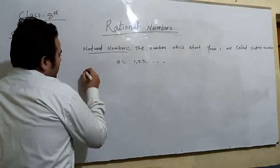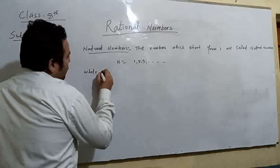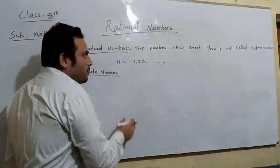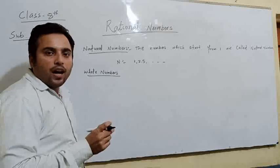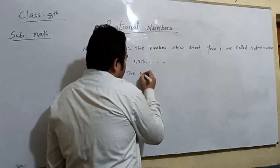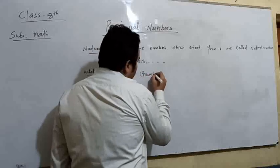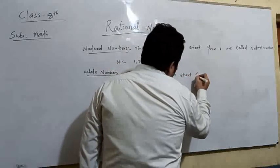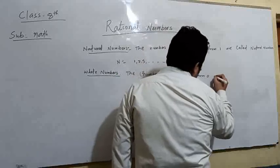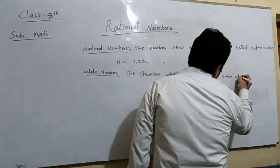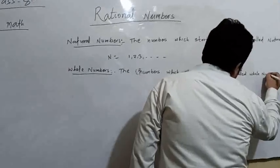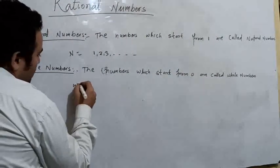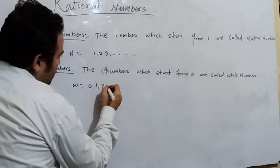After that, we will study whole numbers. The numbers that start from 0 are called whole numbers. For example: 0, 1, 2, 3, and so on.